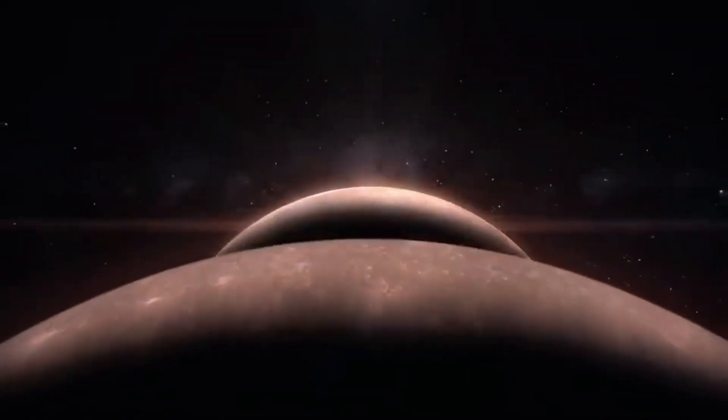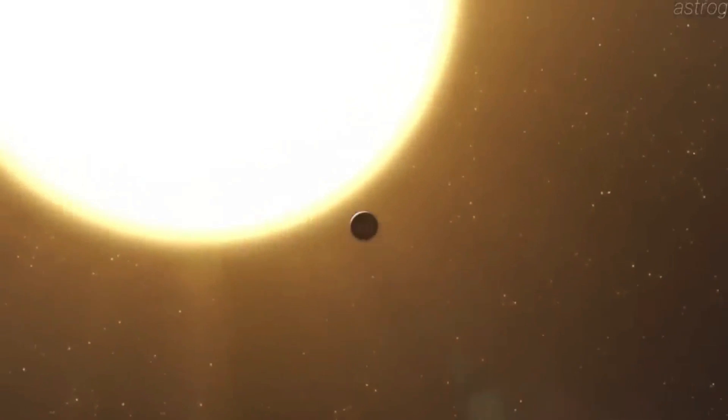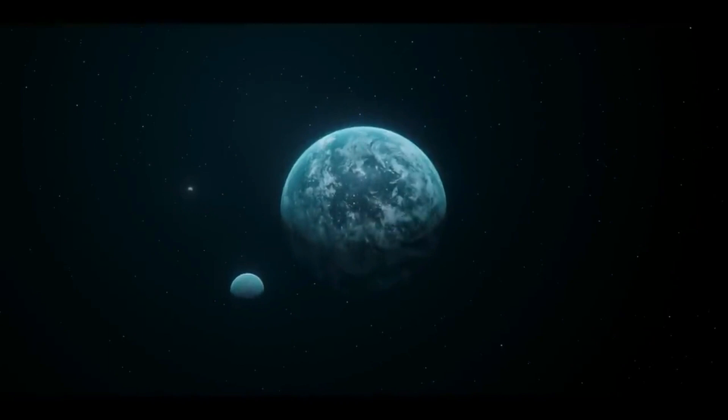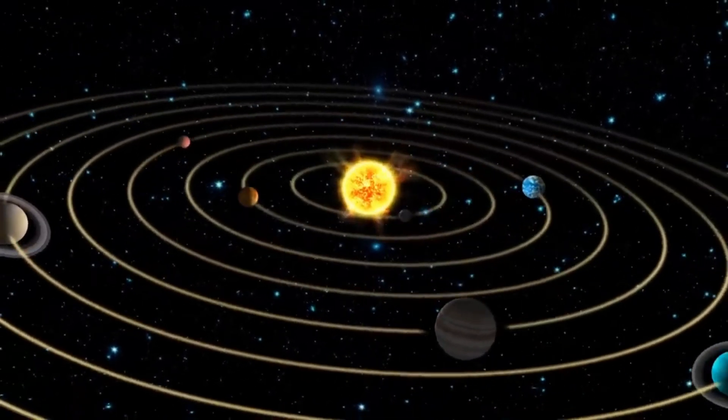In the case of Proxima d, that movement was extremely small, only 16 inches per second, or 1 mile per hour. The successful result shows how sensitive and capable ESPRESSO is in detecting exoplanets.